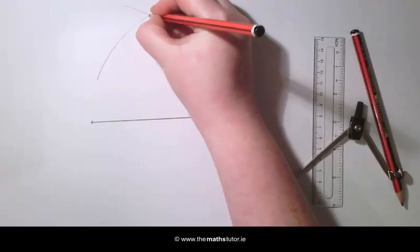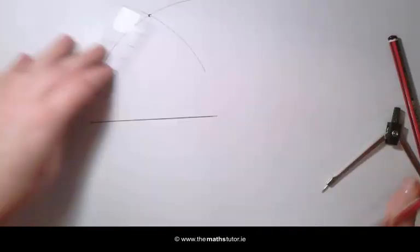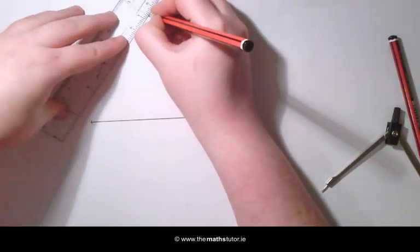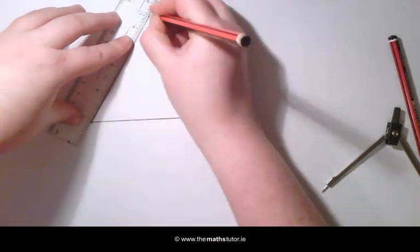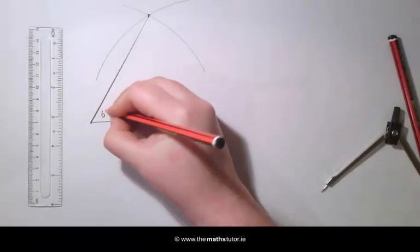Mark the point where these two arcs meet. Draw a line from the end of our line to this point. And here we have an angle of 60 degrees.